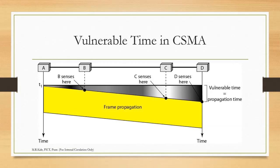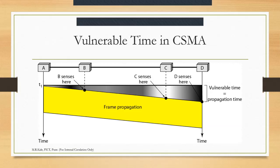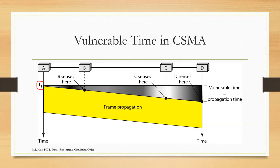This is the vulnerable time or sensitive time in CSMA. In CSMA, the stations will know if someone has already sent the data by sensing the channel. For example, station A sends the data at time instant T1. It will take some time to reach B — there is a lag in receiving the signal. A has sent the data at T1, and B is at some distance from A. Even if B senses the channel, it will come to know that someone has already sent the data only after some lag.